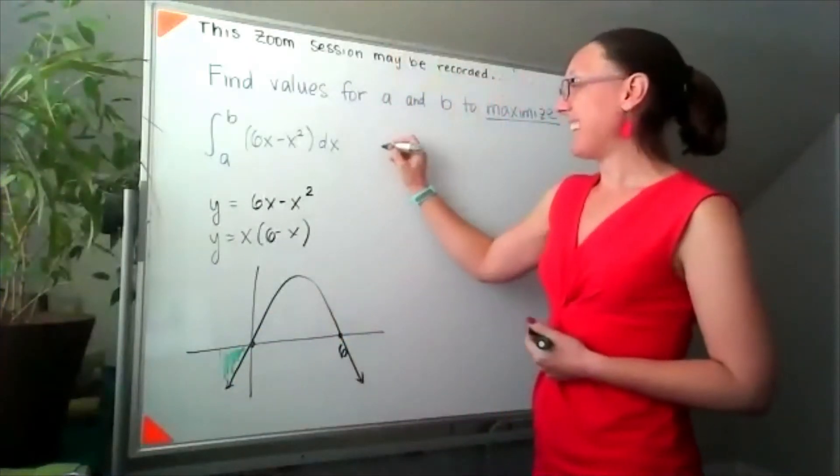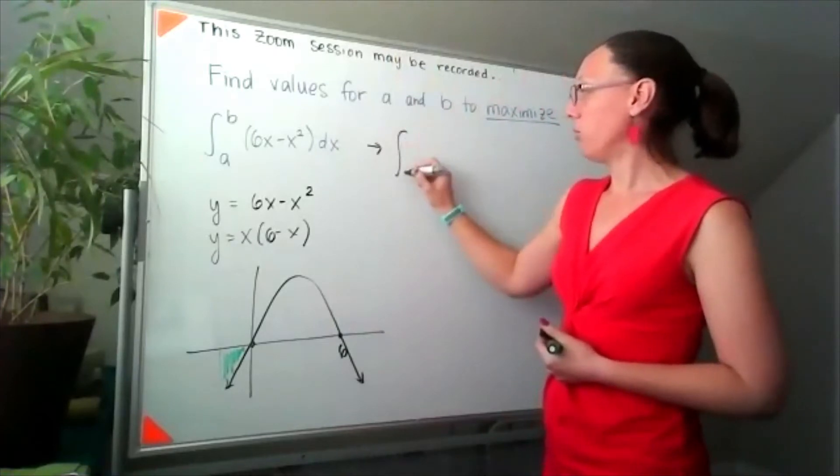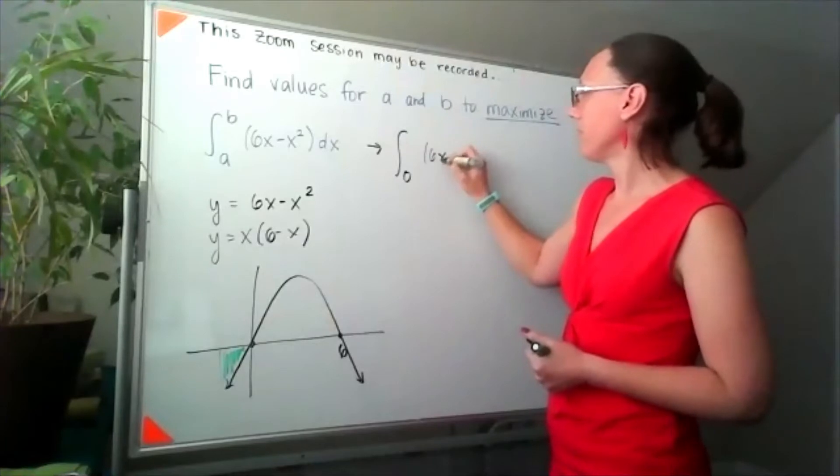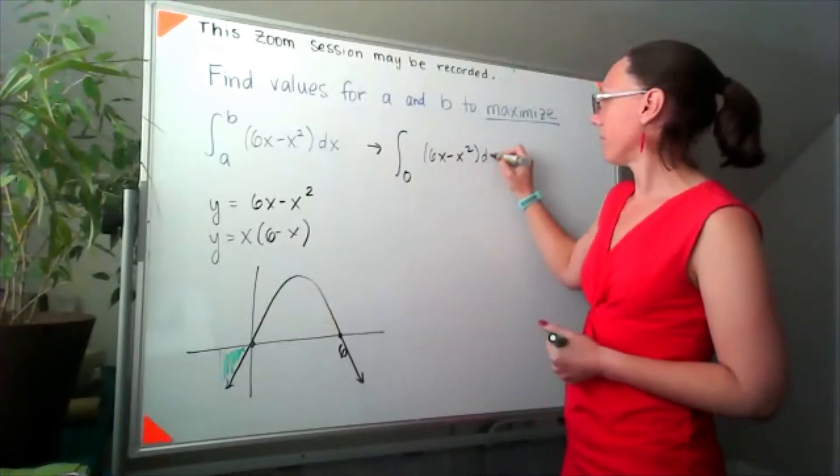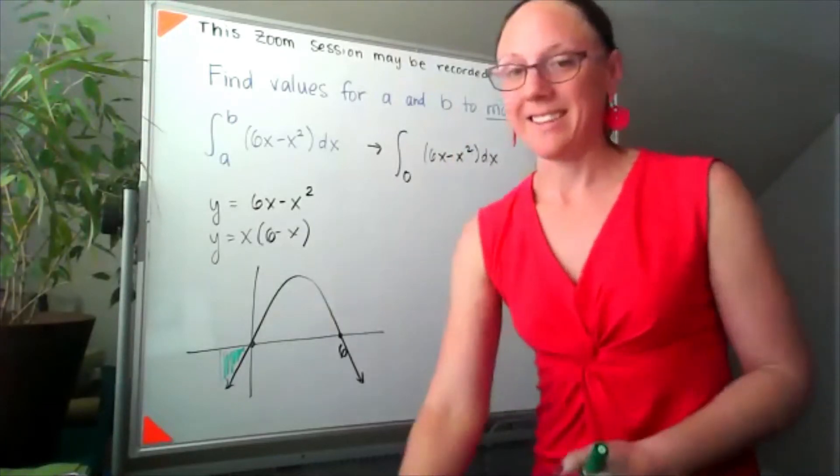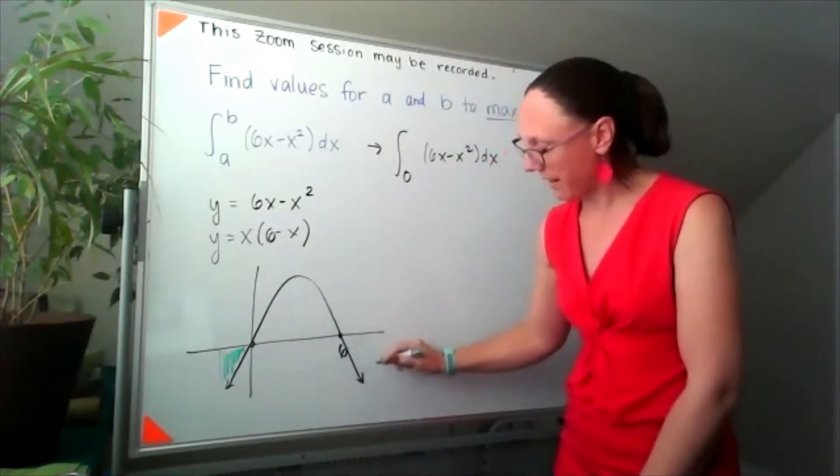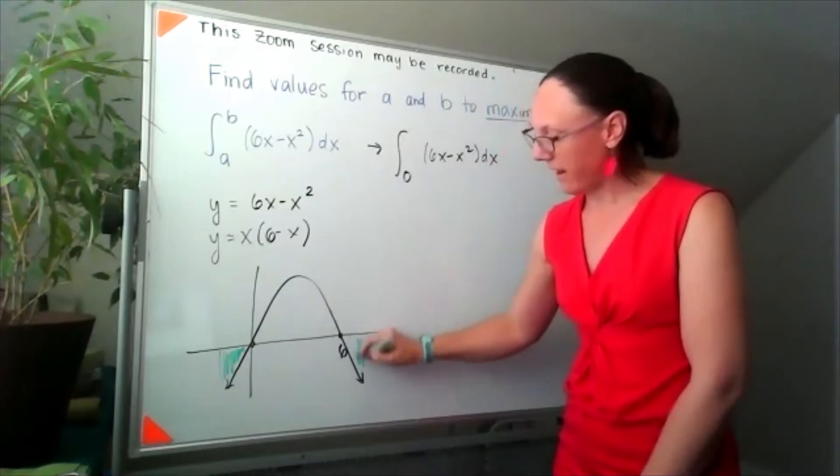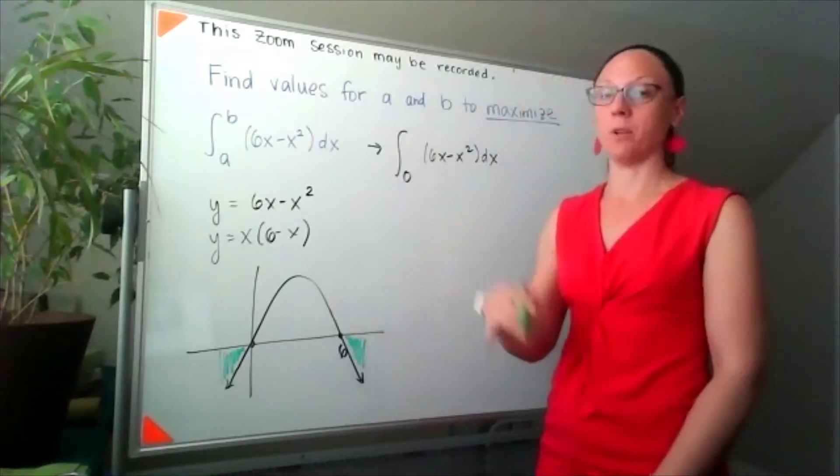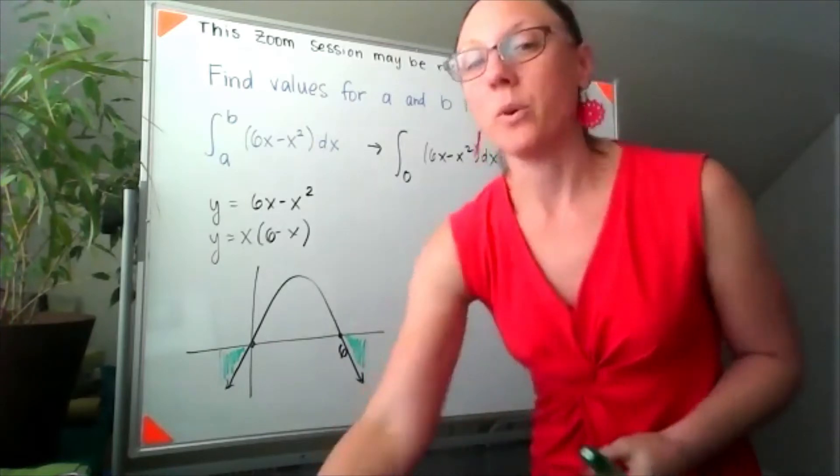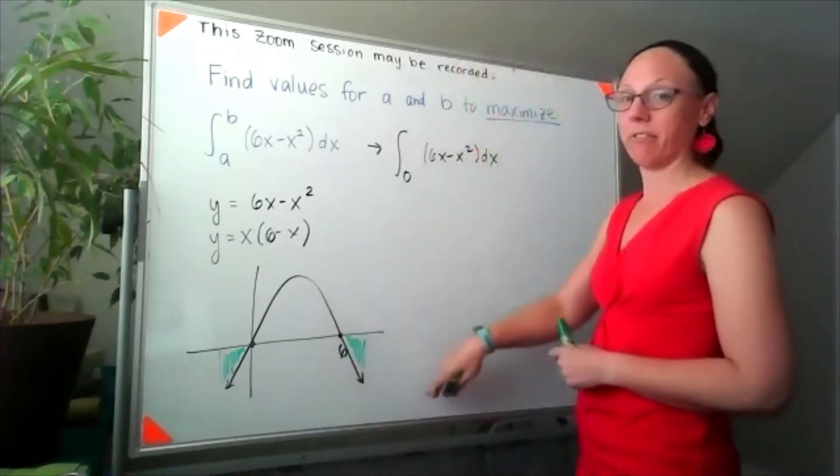Which means I definitely don't want to go to the left of 0. At the same time, if I go past 6, it will also be into territory where this area over here, since it's below the x-axis, would count as negative. I don't want to include any of that negative if I'm trying to maximize the value of the function.